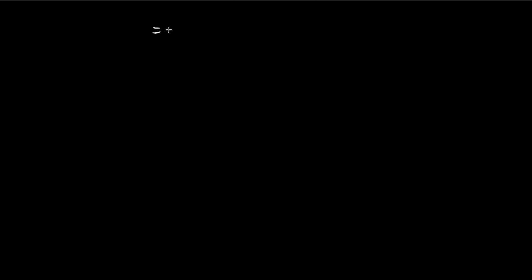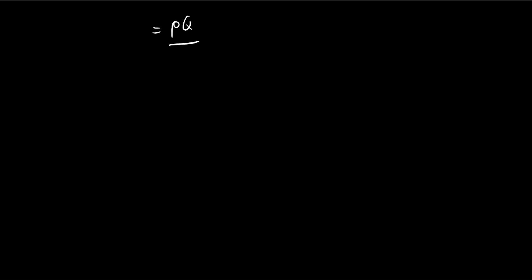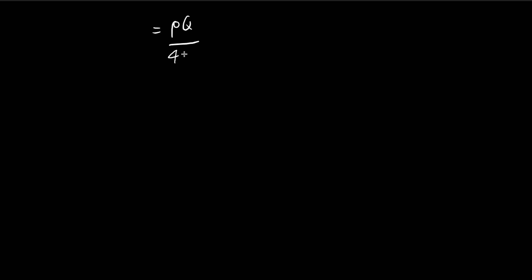Now we can substitute back in. That's going to be equal to r³ minus r⁵/(5R²). Obviously these cancel out—you get R³. So along with the first term, you get something like this.